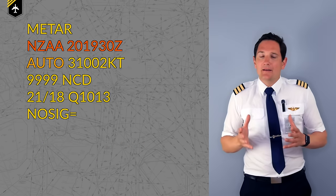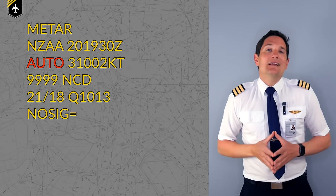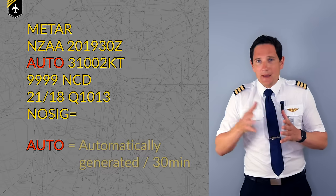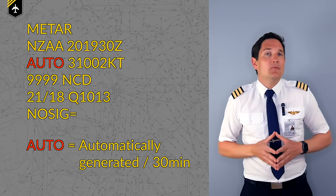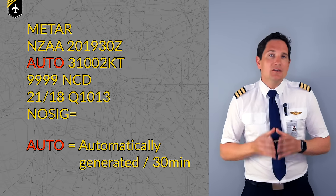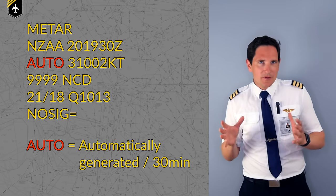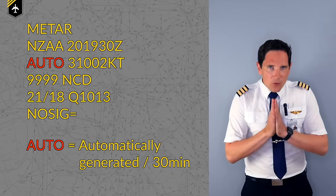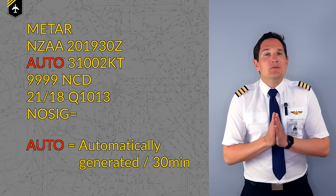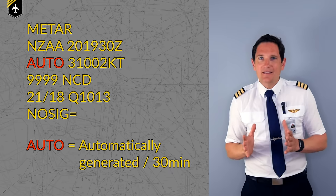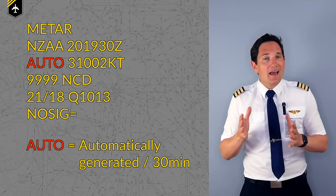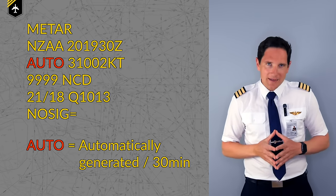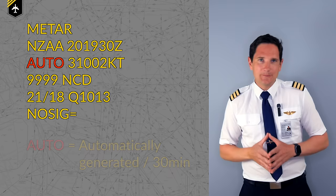The next part, AUTO, means that the report was generated automatically by a weather computer using sensors from around the airport. Almost all airports which serve commercial airline flights will have METARs issued automatically every half an hour.